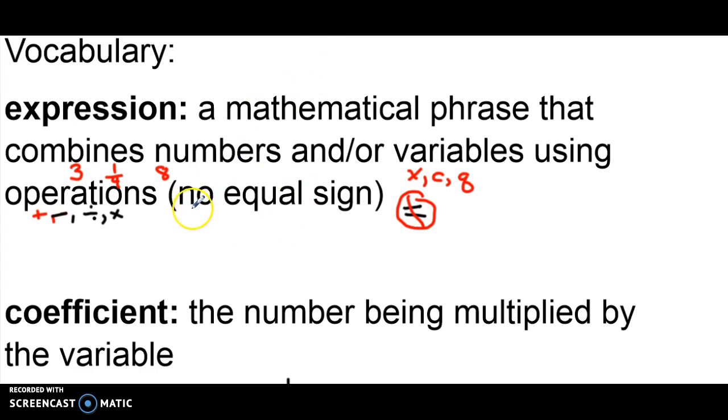So an example of an expression is something like just the number five. That would be an expression. Or if I had the mathematical phrase three plus two, that's an expression. Maybe something with a variable like negative 2X plus 7. That would also be considered an expression.